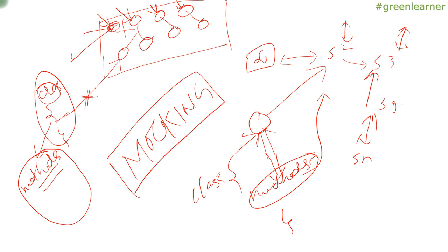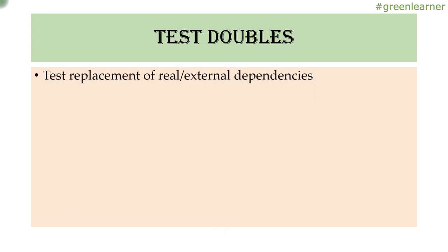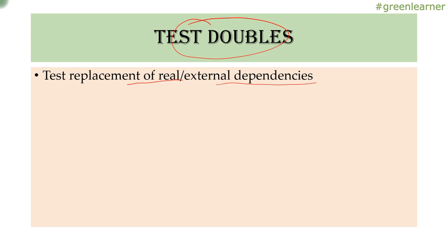There is a technical term for this: test doubles. Test doubles are replacements for real external dependencies inside a method — when a method is calling another class or dependency, those are replaced by test doubles. There are different kinds of test doubles.